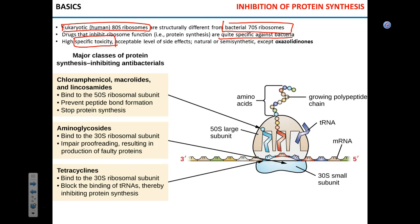Specific toxicity should be high. High specific toxicity means the drug kills or inhibits bacteria but not human cells — it is very selective against bacteria. Cell wall inhibitors have high specific toxicity because we don't have cell walls — they target only bacterial cells. We'll also discuss drugs that are the complete opposite — with very low specific toxicity, very bad for humans.